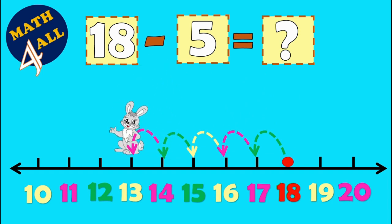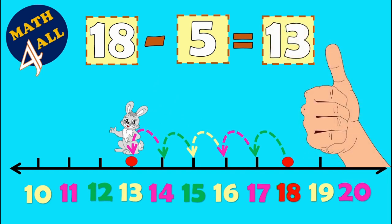Mr. Rabbit stops on 13. It means 18 minus 5 equals 13. Good job, thank you.